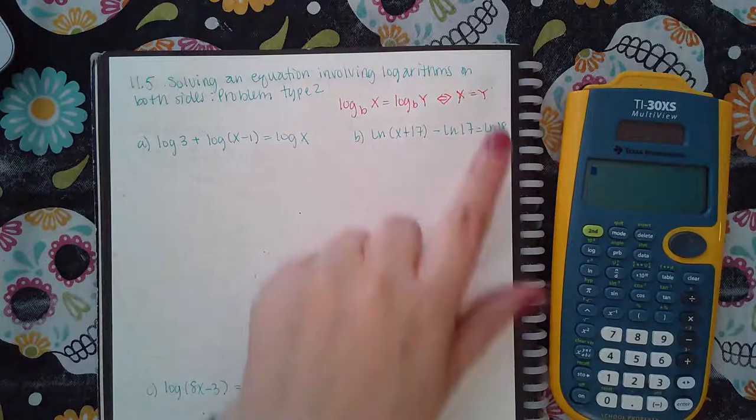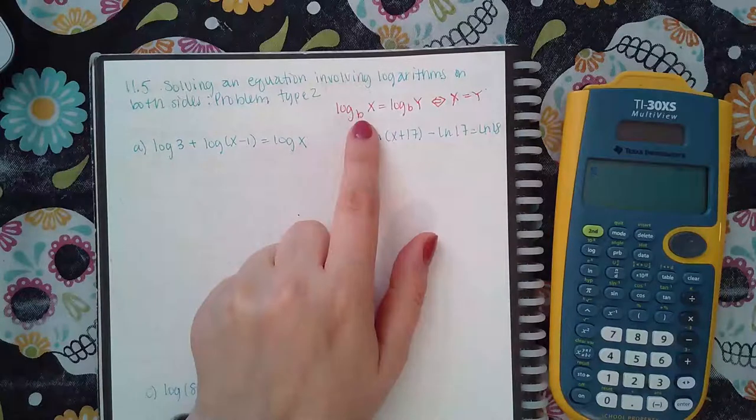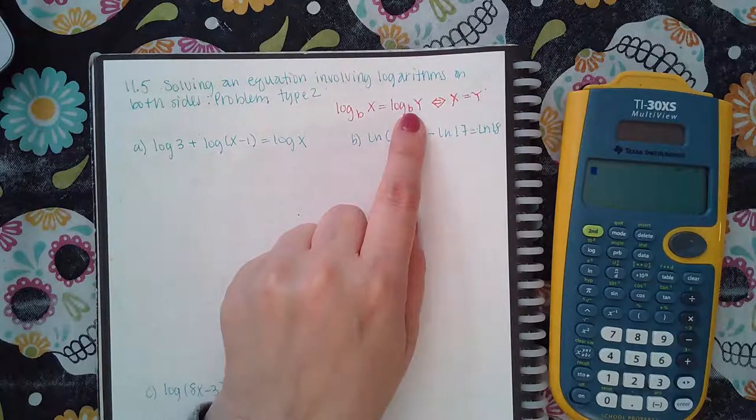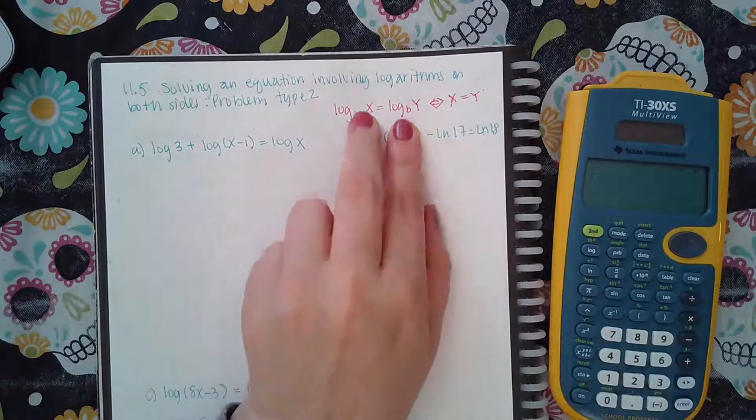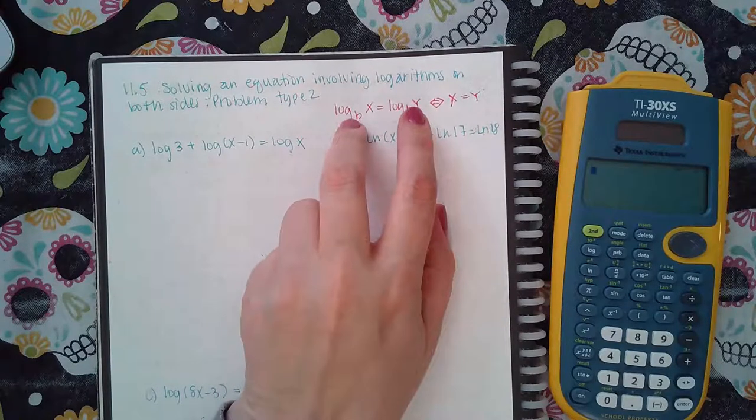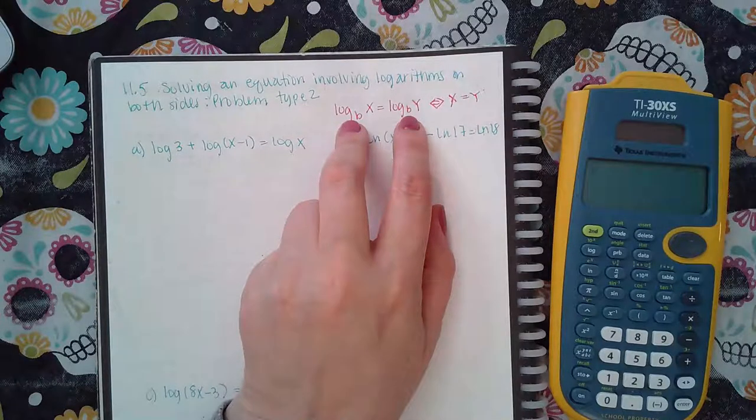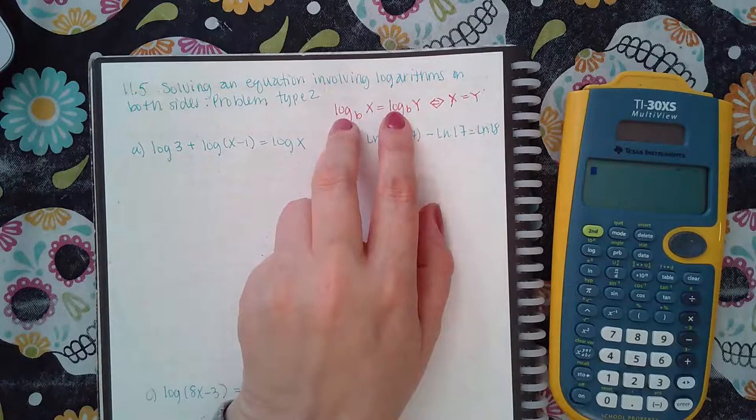In that case we need to use this property that says if you have log with the base of an argument equal to another log with the base of a different argument, the only way that the left-hand side could be the exact same as the right-hand side, or be equivalent to what's on the right-hand side, they already both have log, they already both have the same base.